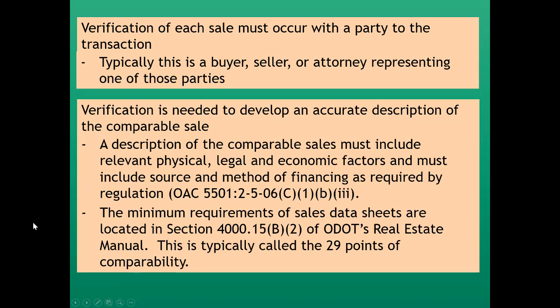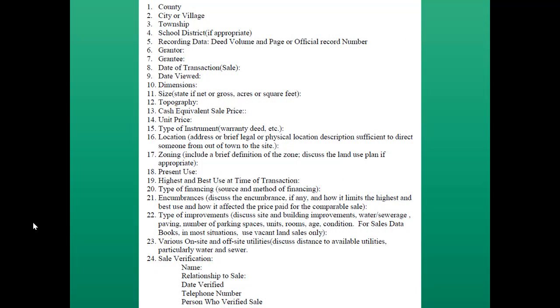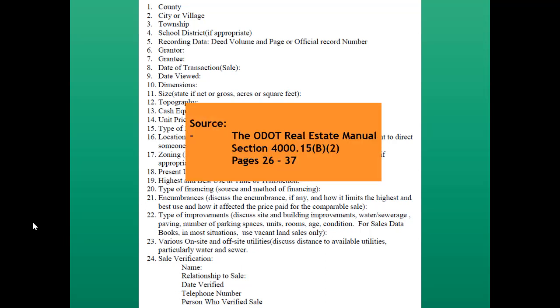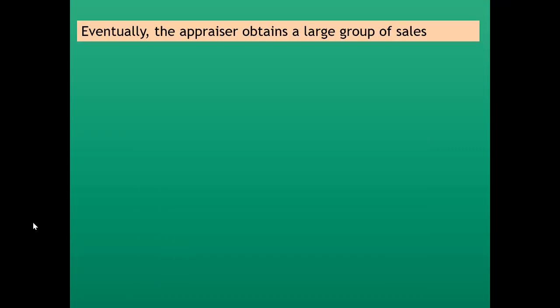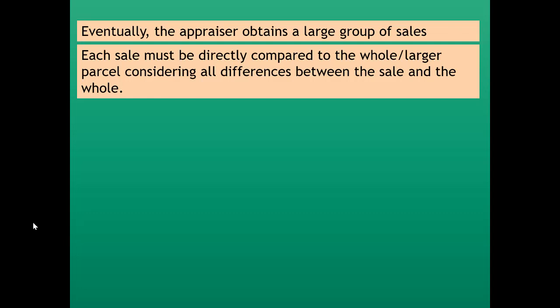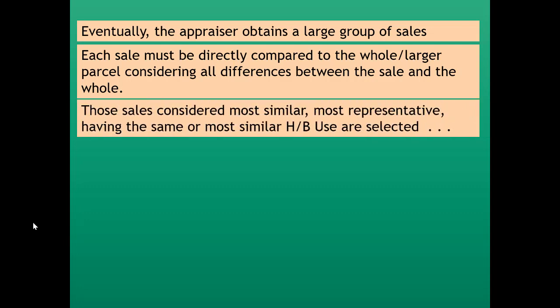The minimum requirements of sales data sheets are located in Section 4000.15, subparagraph B2 of ODOT's Real Estate Manual — typically called the 29 points of comparability. This comes directly from the policy and procedural manual. Eventually, the appraiser obtains a large group of sales. Each sale must be directly compared to the whole parcel, considering all differences, and those sales considered most similar and most representative, having the same or most similar highest and best use, are selected.